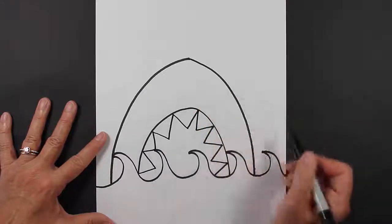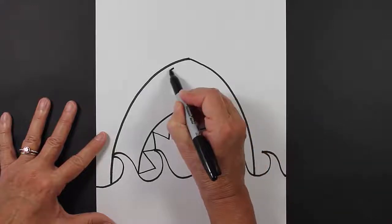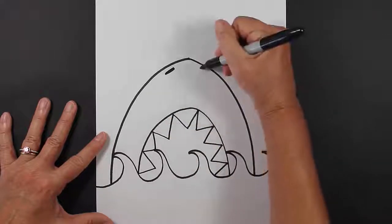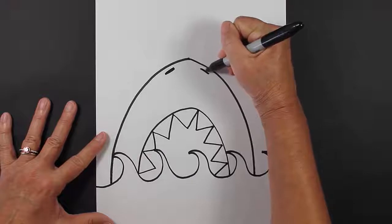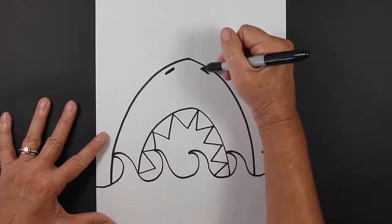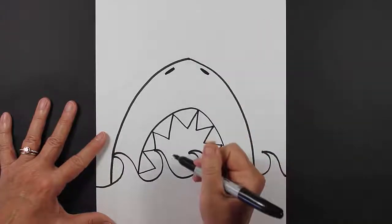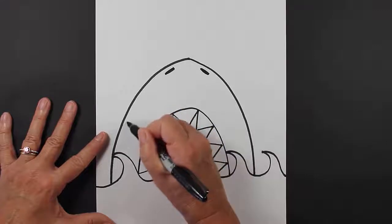Now I'm going to come back up here to the top, and I'm going to make some nostrils. Pretty thick. And then I'm going to make some eyes about right here.